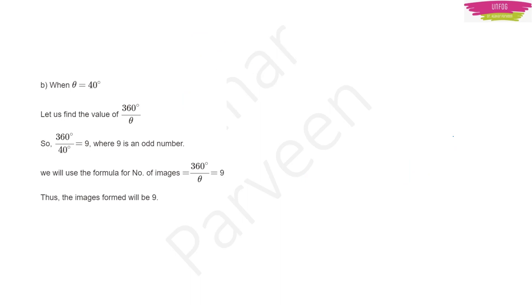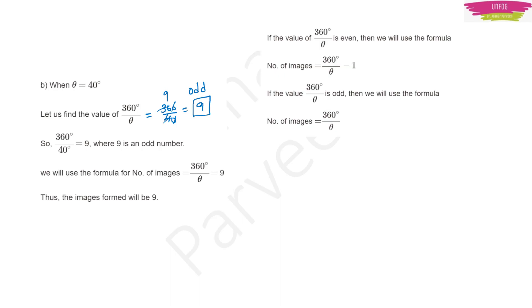For θ = 40°, calculate 360/40: the zeros cancel, giving 9, which is an odd number. Since it is odd, I do not subtract 1 — the number of images is 9 as it is. So: 360/40 = 9, which is odd, therefore number of images = 9.